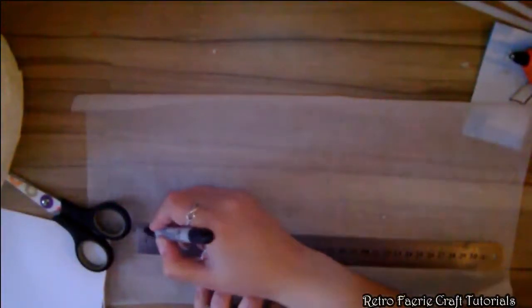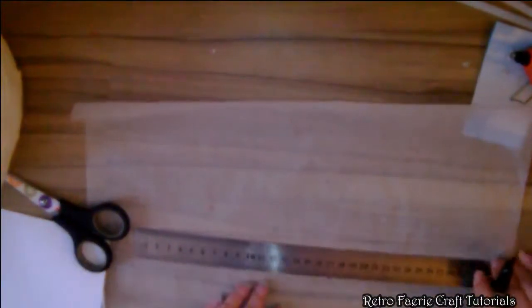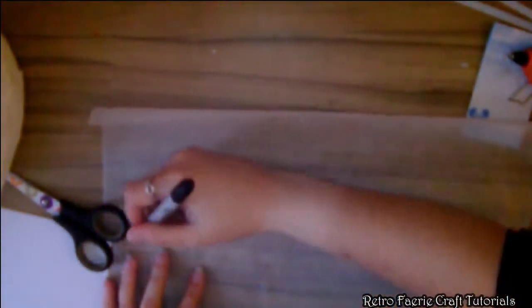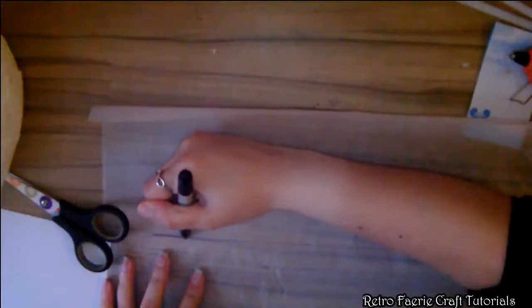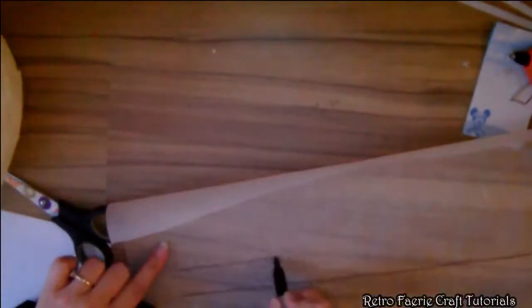Then get some greaseproof paper and I'm going to basically draw the face guard, if that's what it's called, the grid bit that's on the front of the mask. Not quite sure what it's called. Mine was about 30 centimeters, so I drew one line across which is going to be the bottom of it.